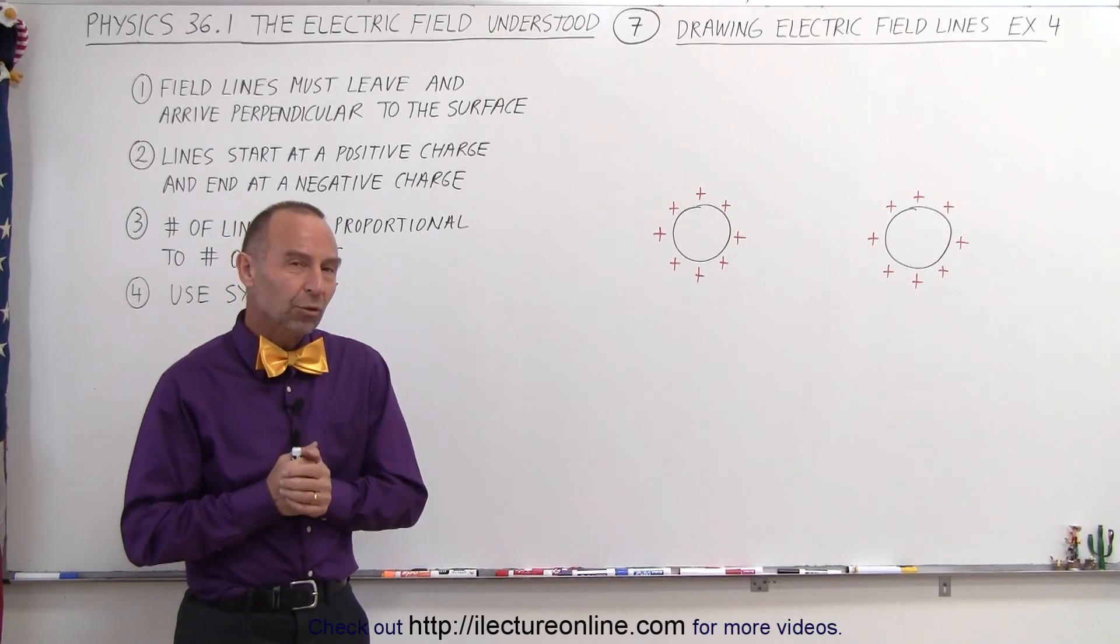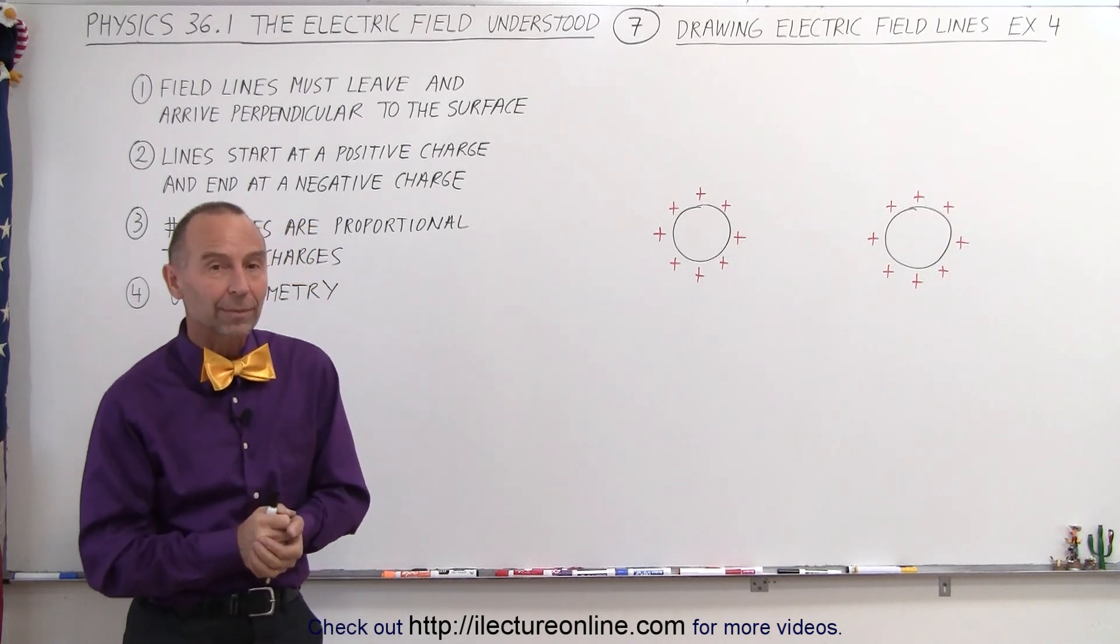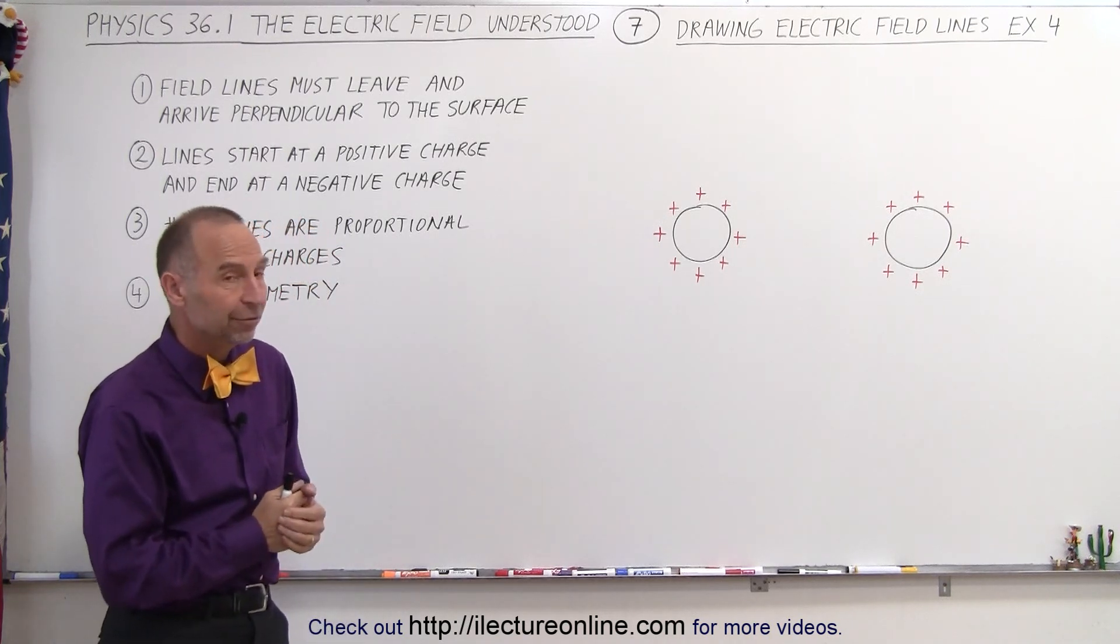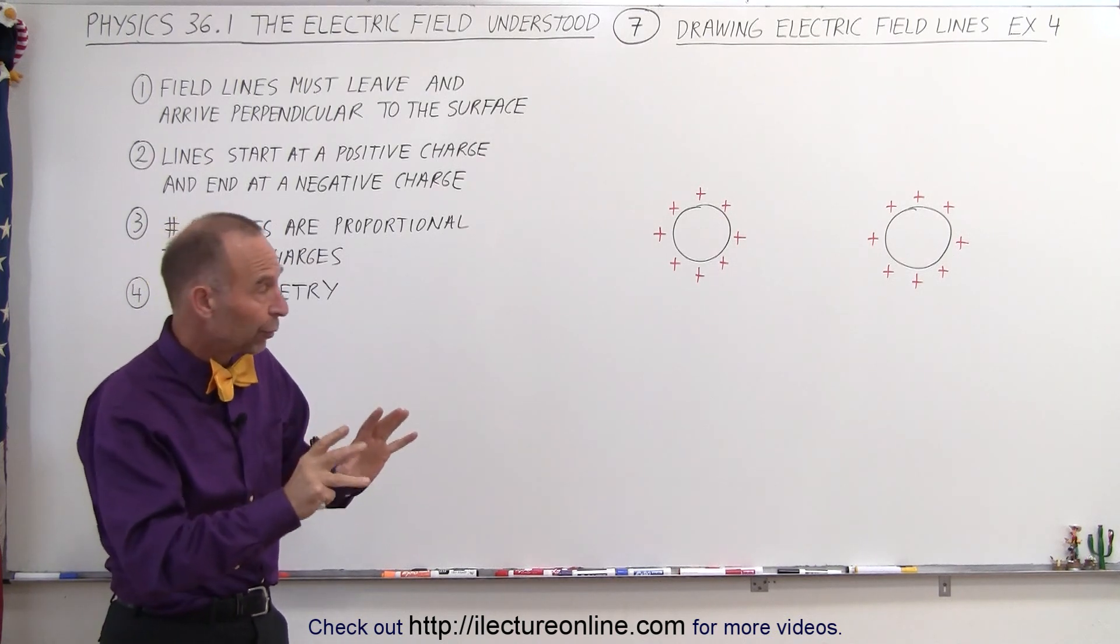Welcome to Electron Line. So what do we do when we have two objects that have the same charge on them, either all positive or all negative? Then the field lines look very different, because the electric field, of course, will look very different.